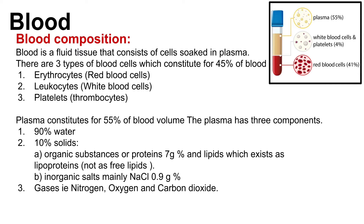Plasma constitutes 55% of blood volume. The plasma has three components. It is made 90% of water and 10% of solids — two parts organic substances, which consist of protein at 7 gram percent and lipids, which exist as lipoproteins, not as free lipids. And inorganic salts, which are mainly sodium chloride at 0.9 gram percent.